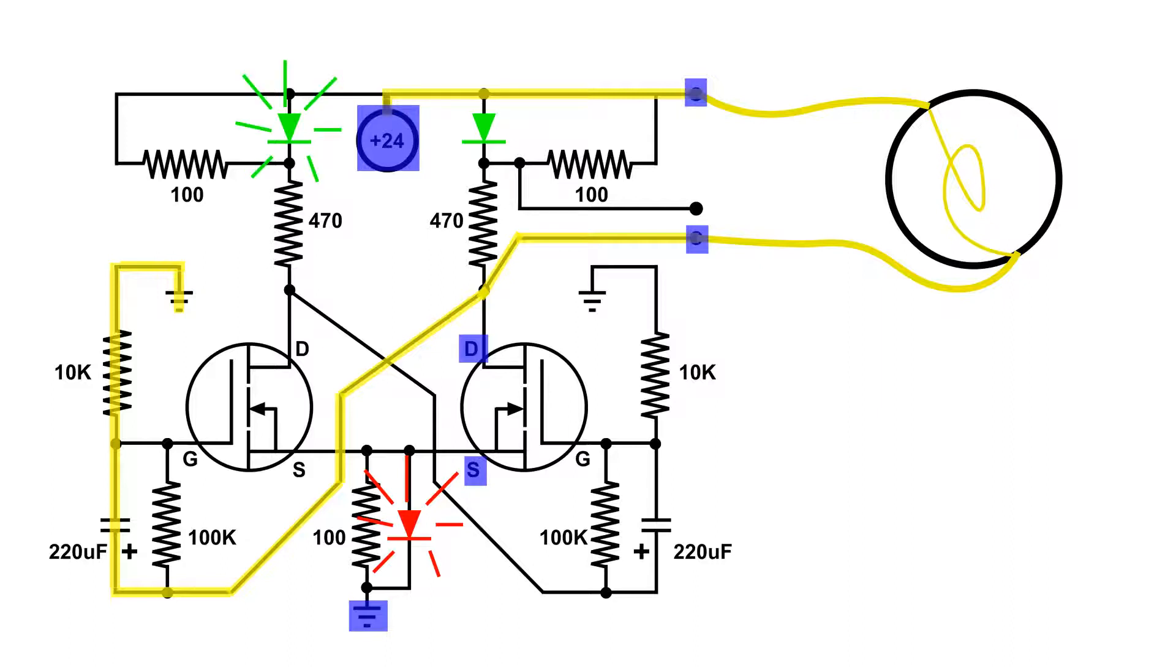Now the left LED is on, and that capacitor now has charged up enough to turn the left MOSFET off. And now the right one is turning on, and it is very bright.